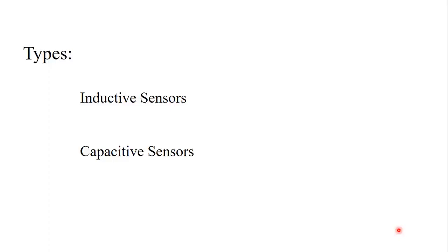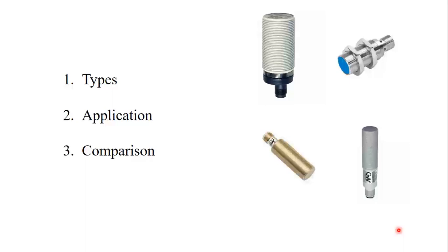There are two types of proximity sensors: one is inductive sensors and the other is capacitive sensors. In this video we will see the types, what are the differences between inductive and capacitive sensors, what are the applications of each, and then we will see the comparison between them. Watch the video till the end.